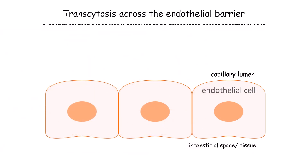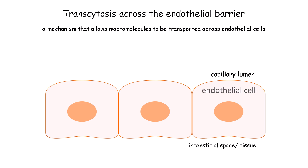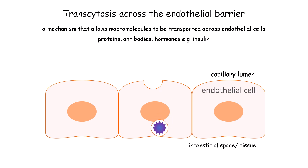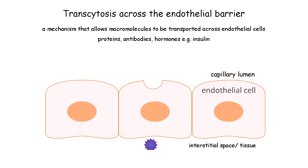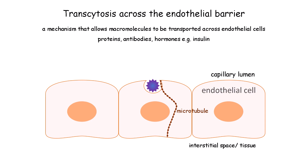Transcytosis is a mechanism by which macromolecules can be transported across endothelial cells. The types of macromolecules that use this process include proteins, antibodies, and hormones. A specific example is insulin. The molecule binds to a site on the luminal side, or blood-facing side, of the cell. This triggers invagination of the plasma membrane, which forms a vesicle around the molecule. It then pinches off into the endothelial cell and travels through the cytoplasm to the other side. The vesicle uses the cytoskeleton, especially microtubules, to make its journey. When it reaches the opposite side, the vesicle membrane fuses with the plasma membrane, releasing the molecule into the interstitial space of the tissue.